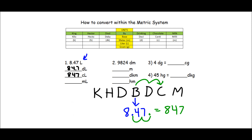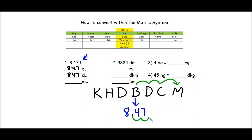Let's go ahead and do the next one. Again, we start with 8.47 under by, because that's where liters is found. And now I'm going all the way to milli, so I'm going three spaces to the right. My decimal is going to move three spaces to the right. I see a problem here — there's an empty spot. If you ever have this happen, just fill it in with a zero. So my new number would be 8470, which means that there are 8470 milliliters inside of 8.47 liters.